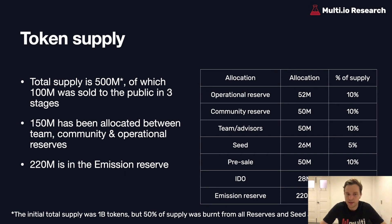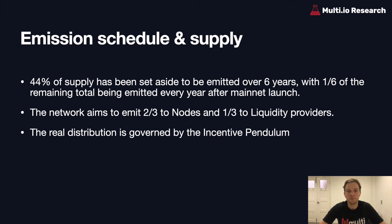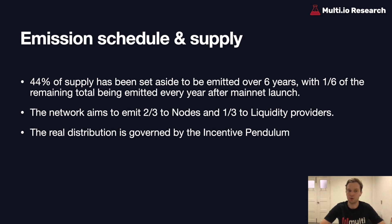It must be noted that the initial total supply was one billion tokens. But in October 2019, the team decided to reduce or burn half the supply using the reserves and the seed allocation, meaning publicly sold tokens were not affected. The emission schedule allocates 44% of supply — 220 million tokens — to be emitted over six years, with one sixth of the remaining total being emitted every year after mainnet launch. The network aims to emit two thirds to the nodes and one third to the liquidity providers, though the real distribution is governed by the incentive pendulum.